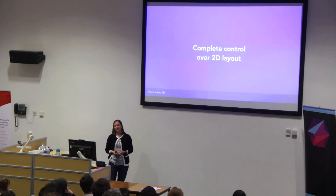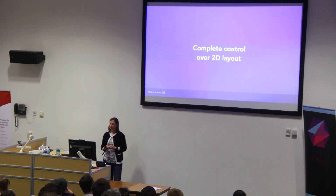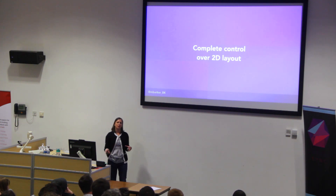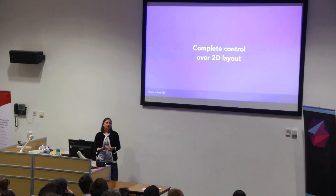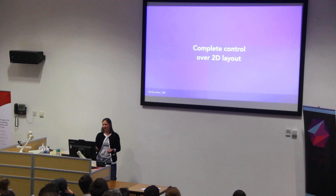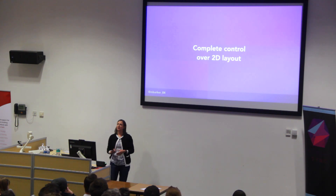Grid is the first specification designed for 2D layouts, so it allows us complete control over placement of items on both the row and the column axis. It allows us to build more complex layouts than with previous layout methods, which would have needed JavaScript or at least a lot of extra hacky code.